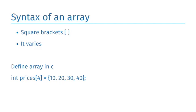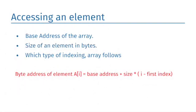We will see how we can define array in C. We need the following information to access any random element in an array: base address of the array, size of an element in bytes, which type of indexing array follows. Address of element of one dimensional array can be calculated using the following formula: byte address of an element a of i is equal to base address plus size into i minus first index.